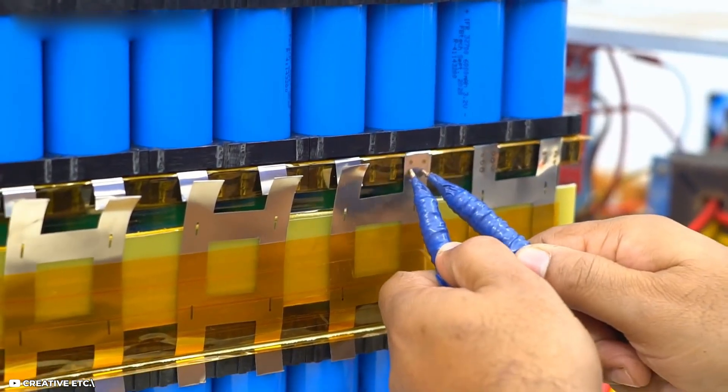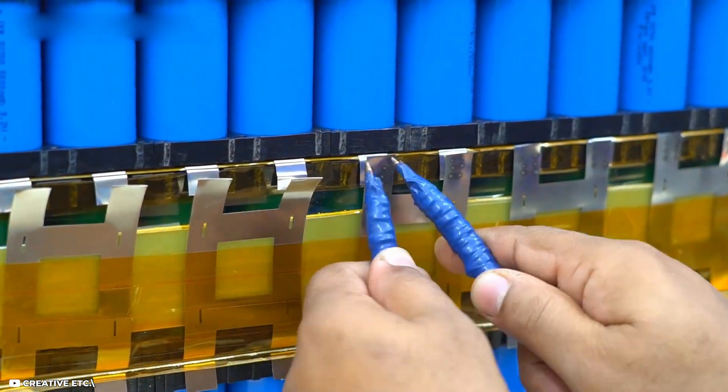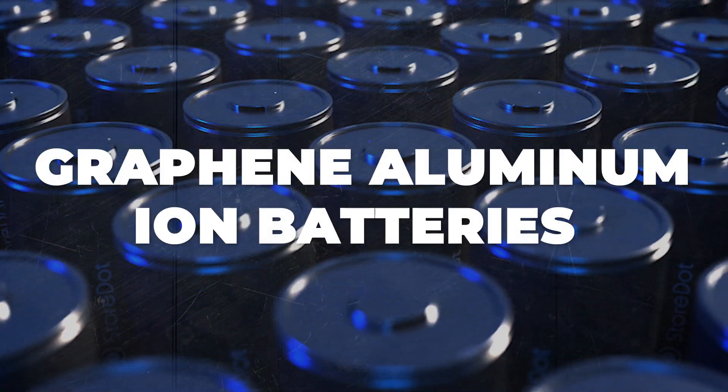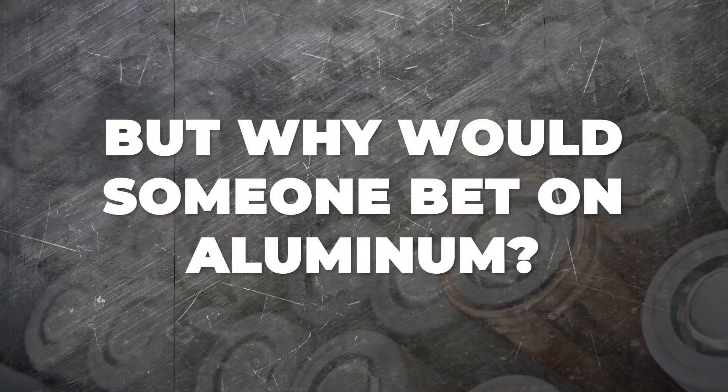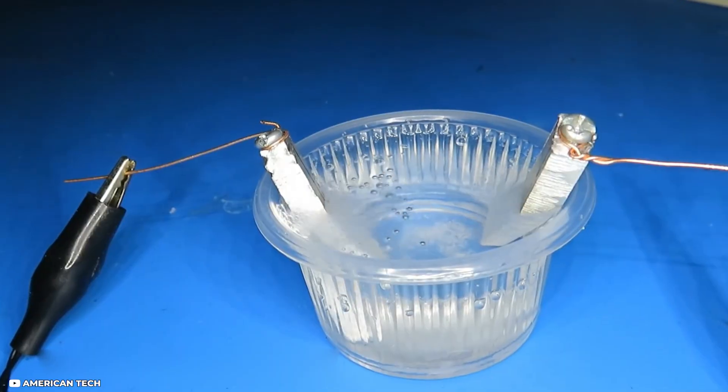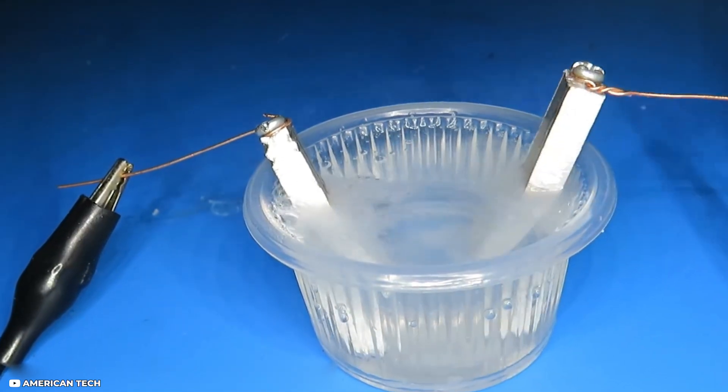But the Australian company GMG has a different approach than the known graphene lithium batteries. They bet on graphene aluminum ion batteries, which they already have patented. But why would someone bet on aluminum?